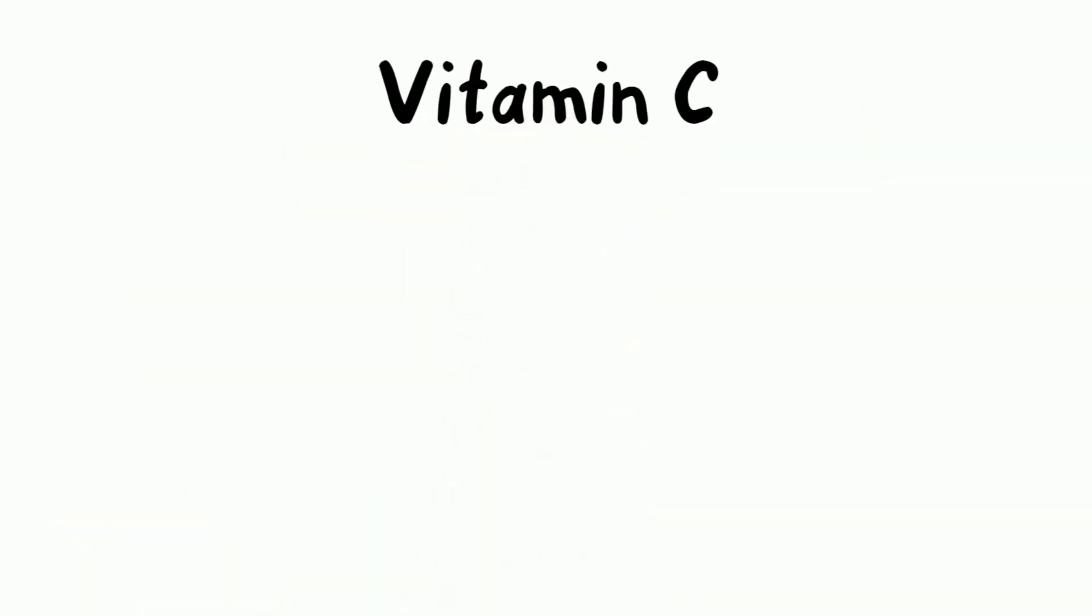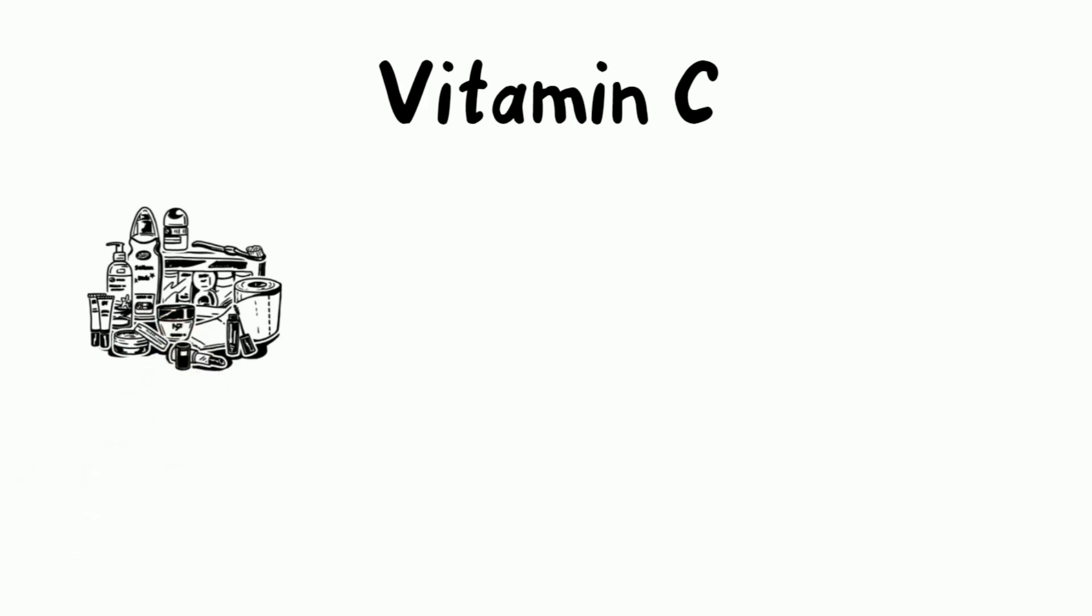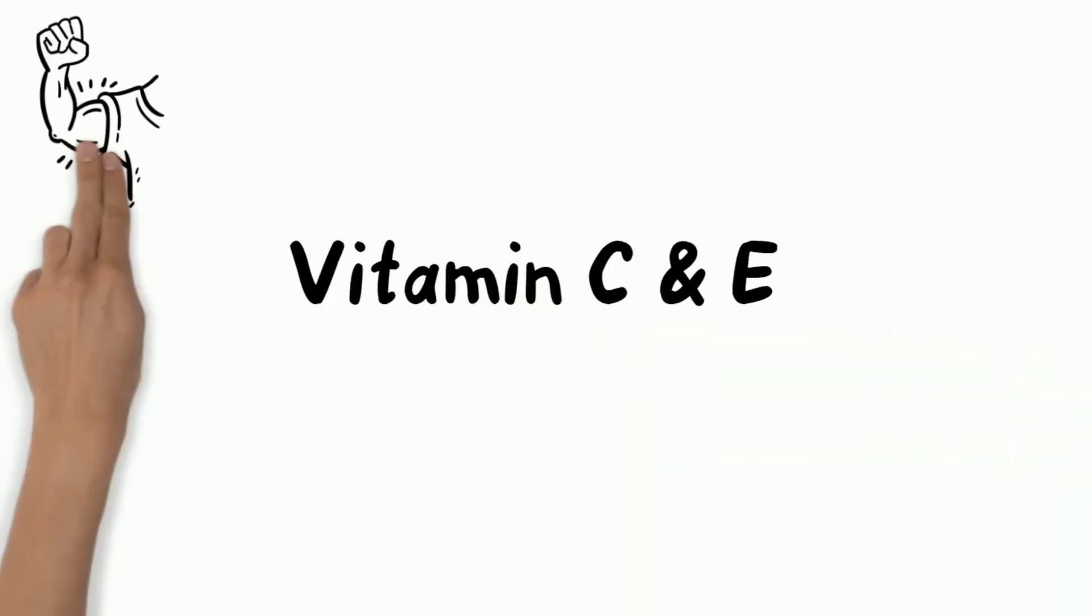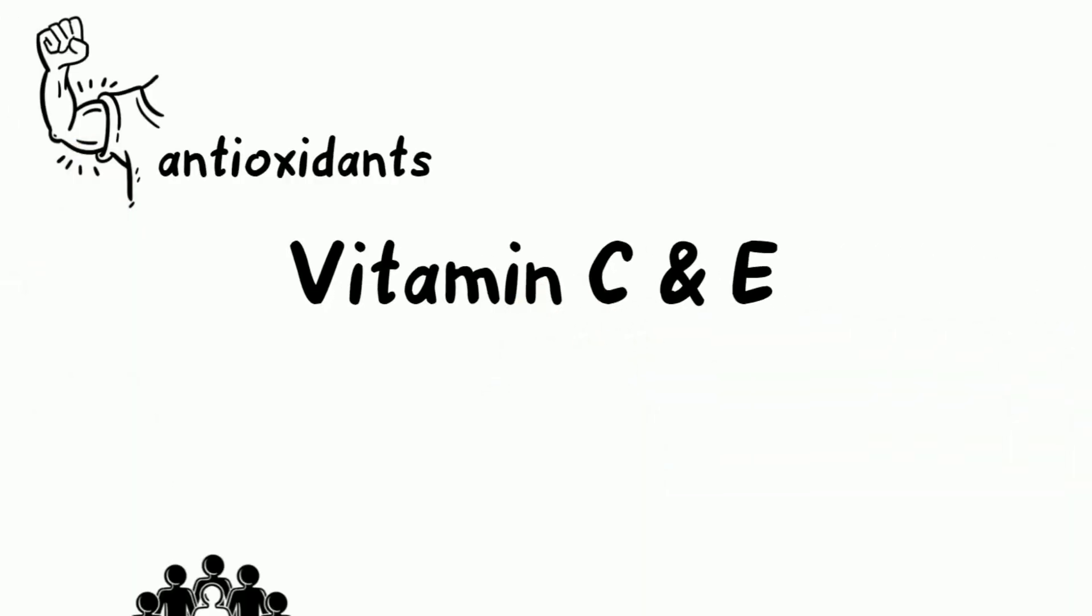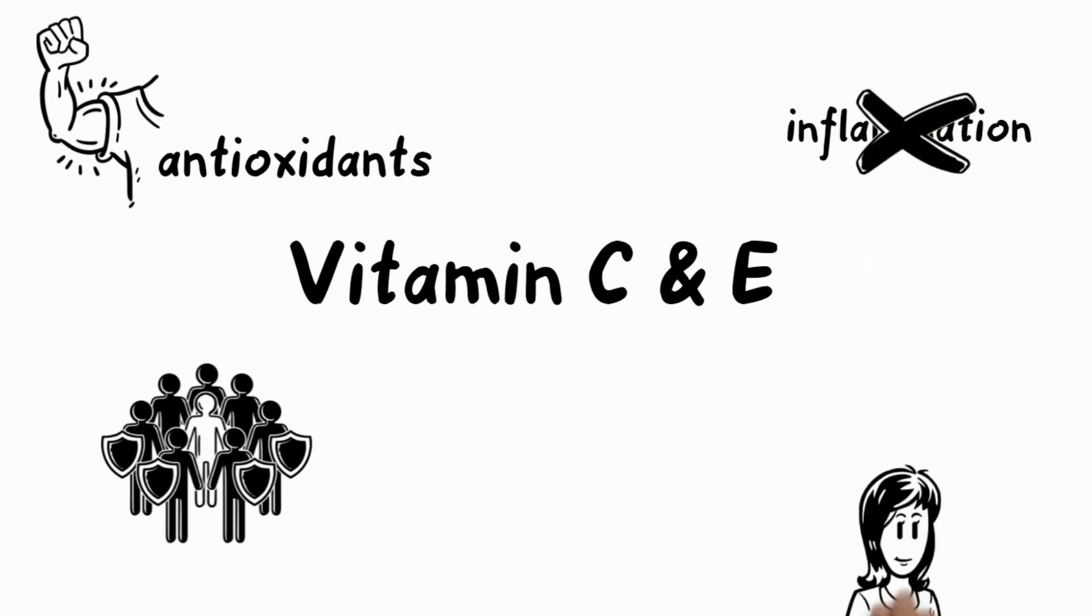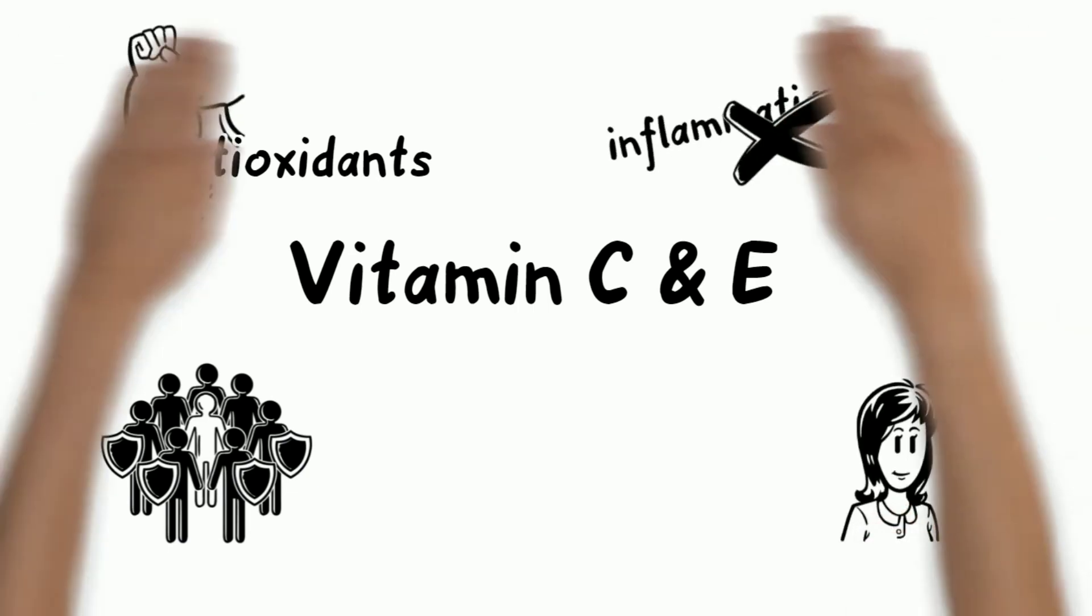Vitamin C can also inhibit melanin production and help to lighten hyperpigmentation and brown spots, even out skin tone, and enhance skin radiance. Furthermore, both vitamin C and E are powerful antioxidants, enabling them to protect skin cells from free radicals caused by UV light. Vitamin E also prevents inflammation and makes our skin look younger.